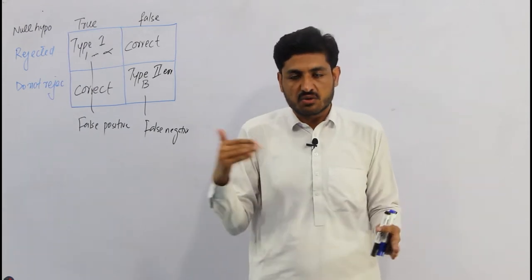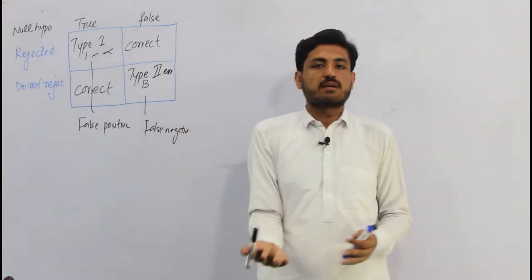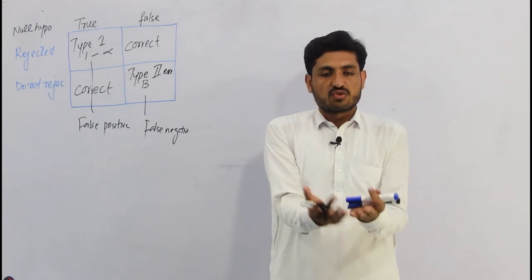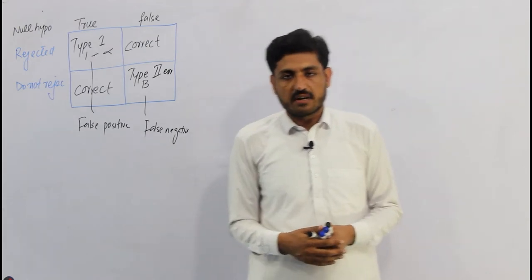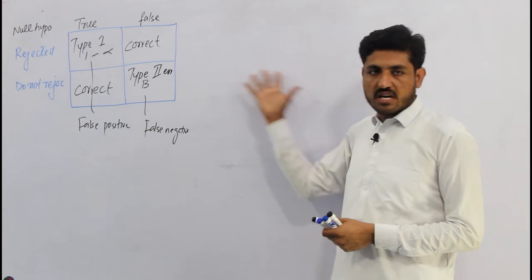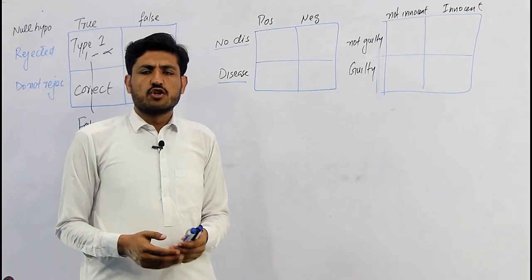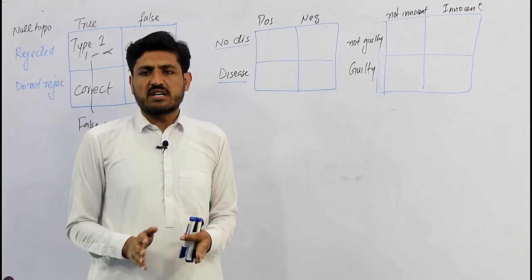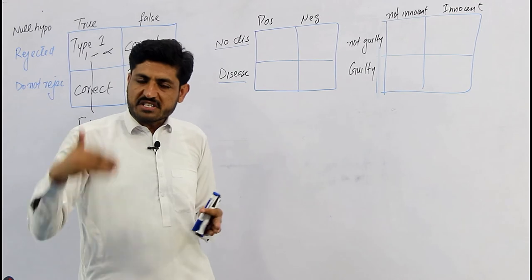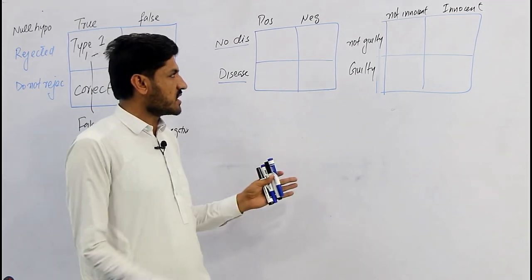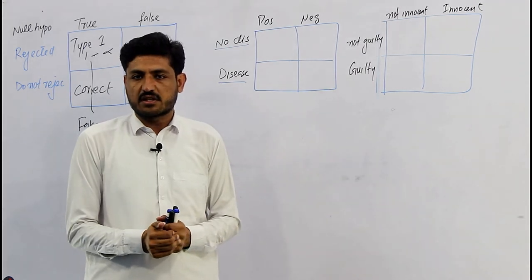Type 1 error کی probability alpha ہوتی ہے — default value 5% ہے، لیکن یہ آپ کی research پر depend کرتا ہے۔ یہ طے کرنے کے لیے کہ کونسا error زیادہ dangerous ہے، ہمیں condition پر depend کرنا ہوگا۔ ہمارے پاس دو conditions ہیں جن میں ہم دیکھیں گے کہ hypothesis testing میں Type 1 یا Type 2 error میں سے کونسا زیادہ dangerous ہے۔